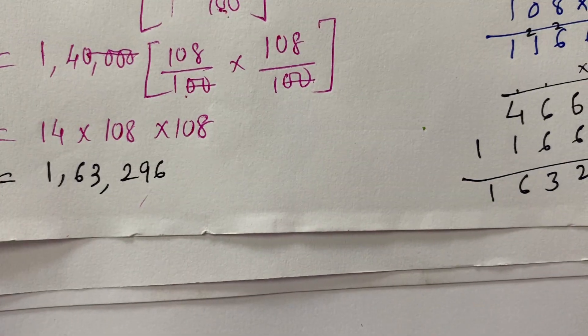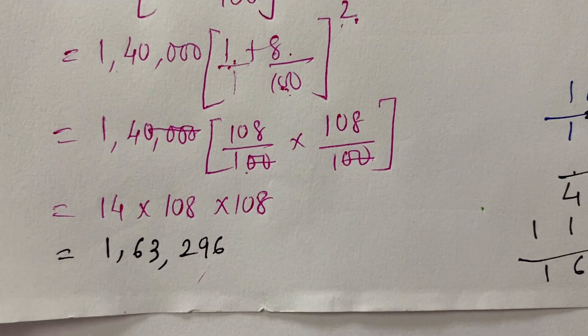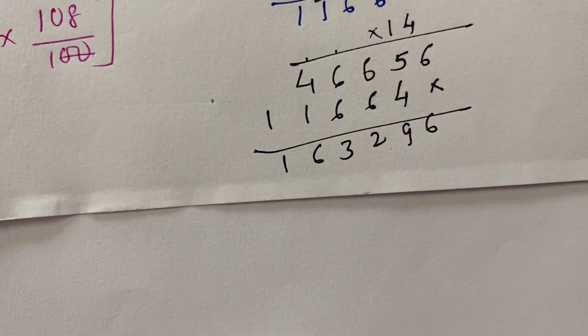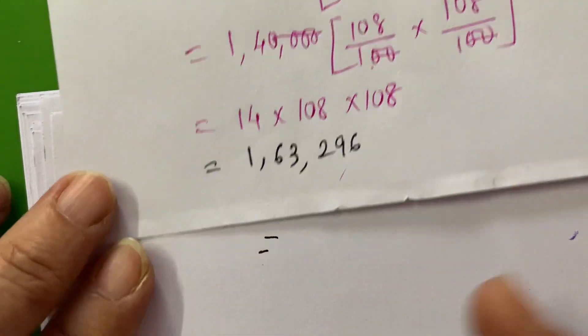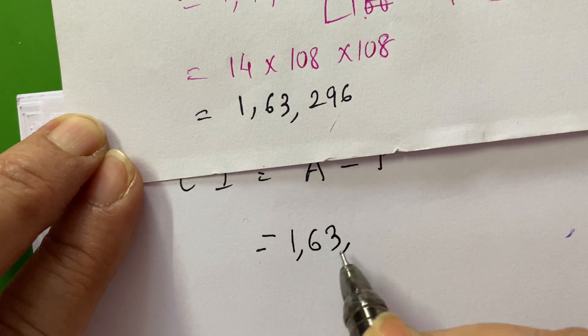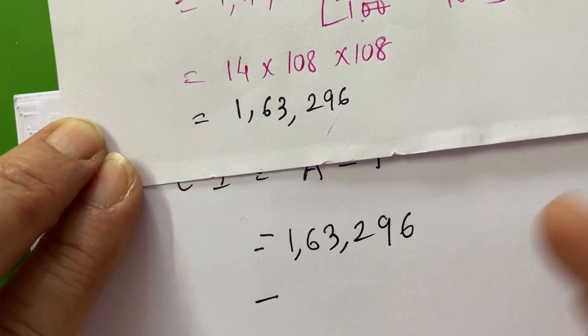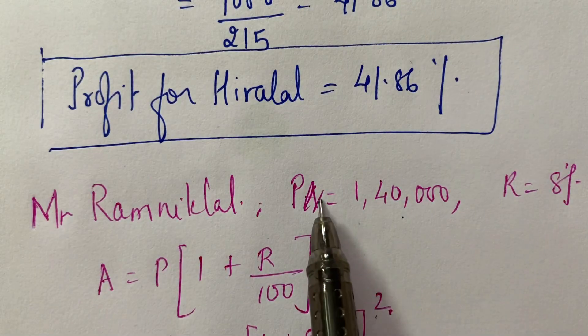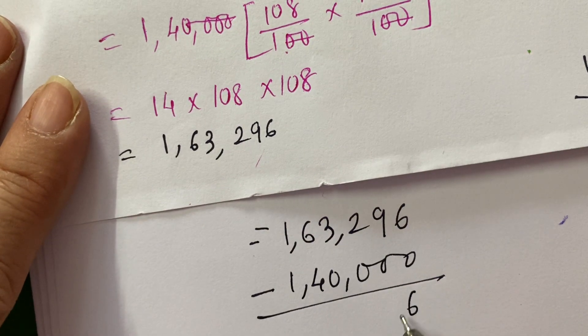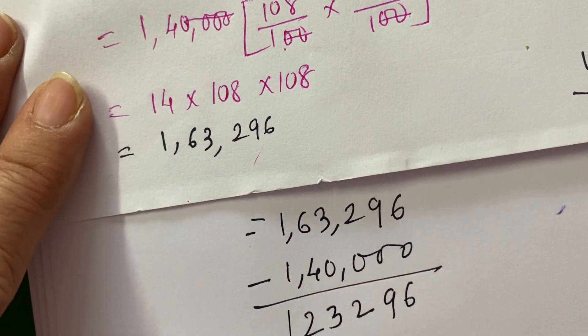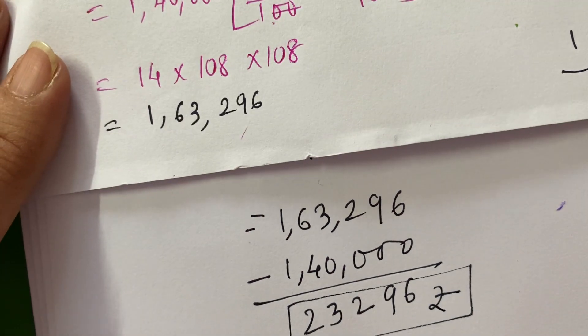Now what do we have to find — the compound interest. The formula for compound interest is: Compound Interest = Amount minus Principal. Amount that Mr. Ramnik Lal got is 1,63,296, and his principal was 1,40,000. So the interest he is getting is 23,296 rupees. This is his compound interest.